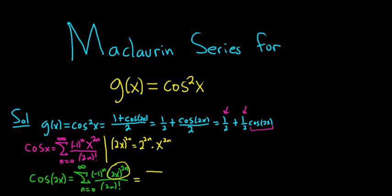So this is equal to the infinite sum, as n goes from 0 to infinity, of negative 1 to the n. And this is 2 to the 2n, x to the 2n, and it's all over 2n factorial.